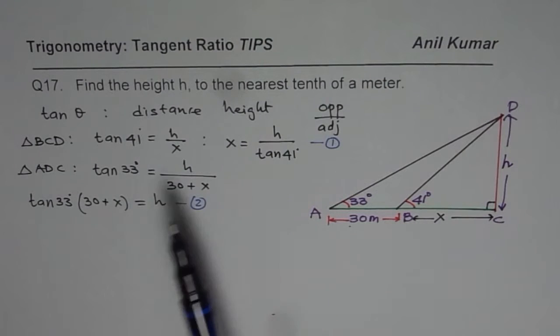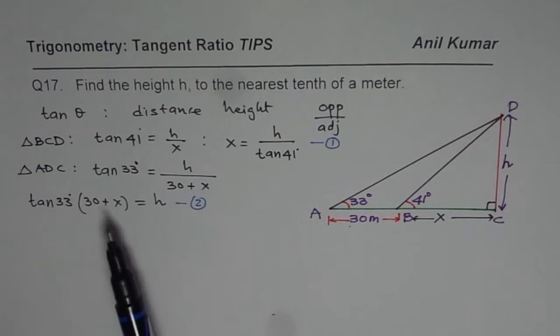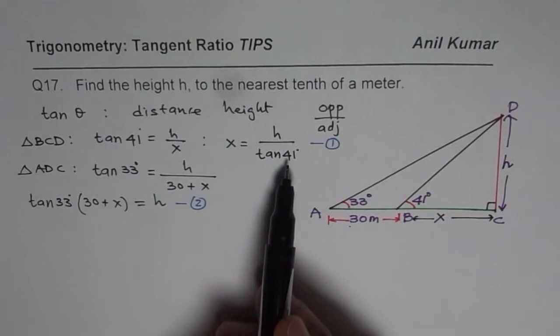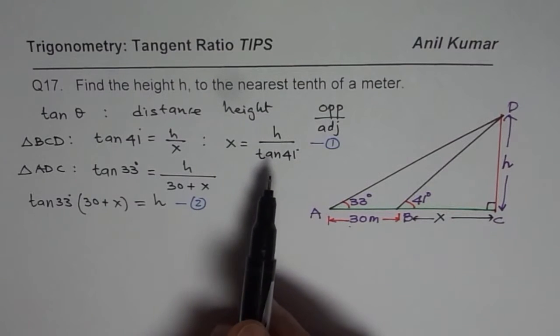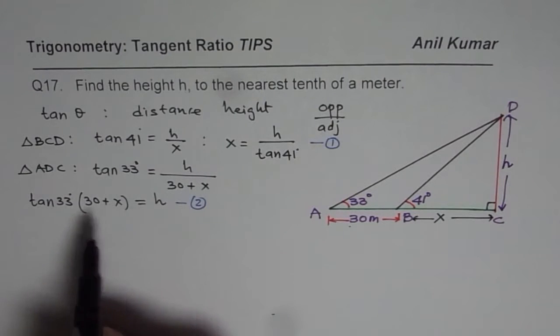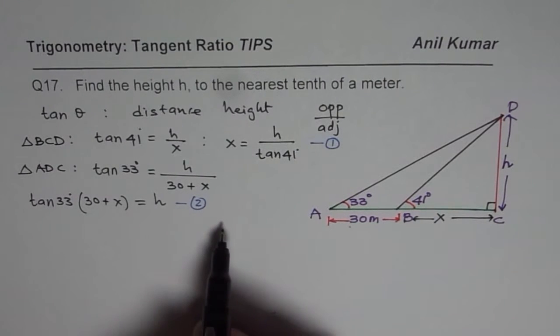Now we can use numbers here. What we will do is replace x with h/tan 41°. That is one possibility. The second one is we can solve this a bit more and do the needful.